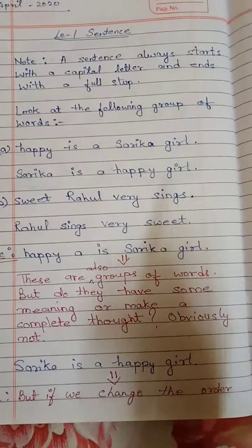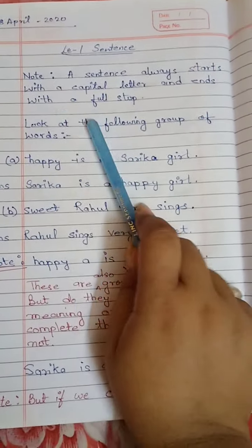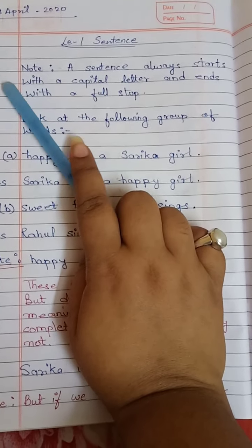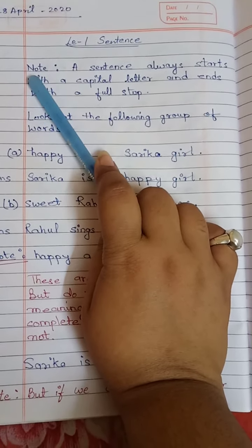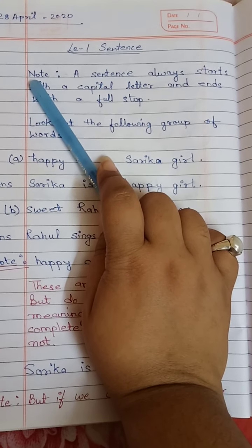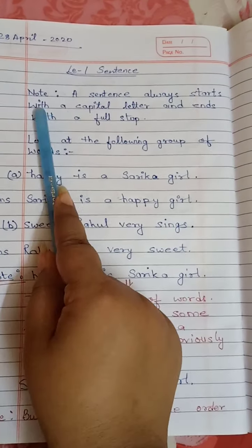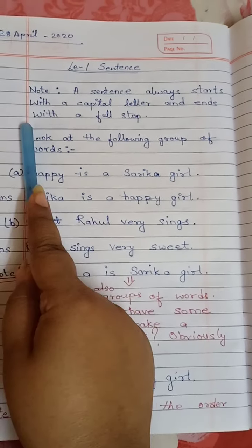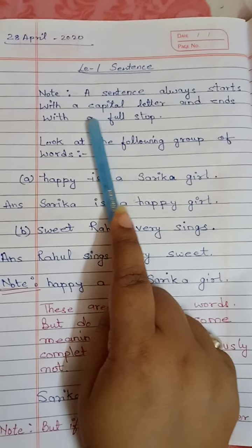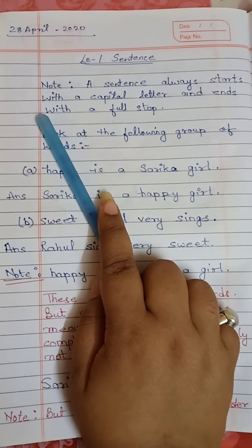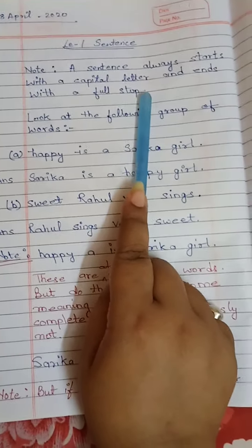Today we will start our lesson 1, that is 'sentence.' Yesterday we studied the definition of sentence with examples. Today we will study more about sentence. Note: a sentence always starts with capital letters and ends with a full stop. Sentence always starts with the capital letters and ends with a full stop.